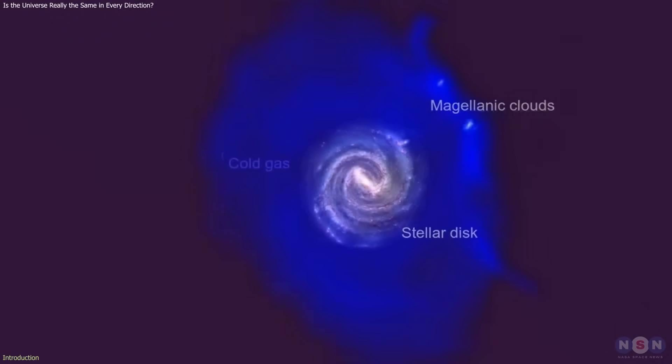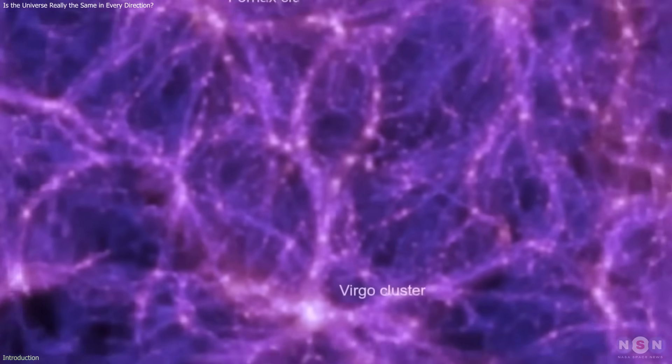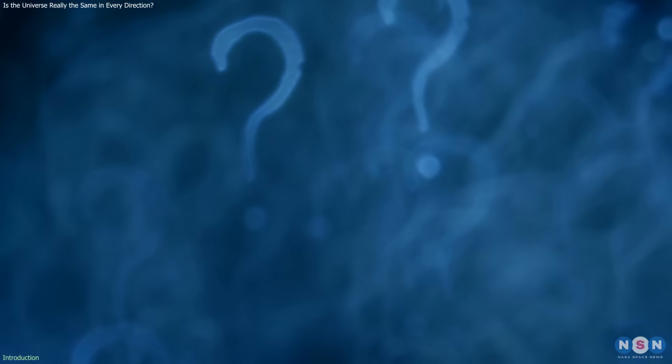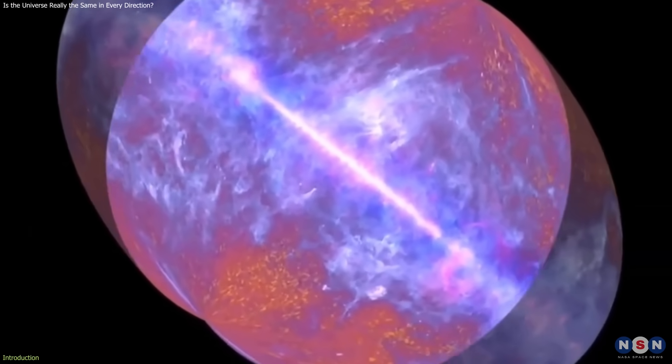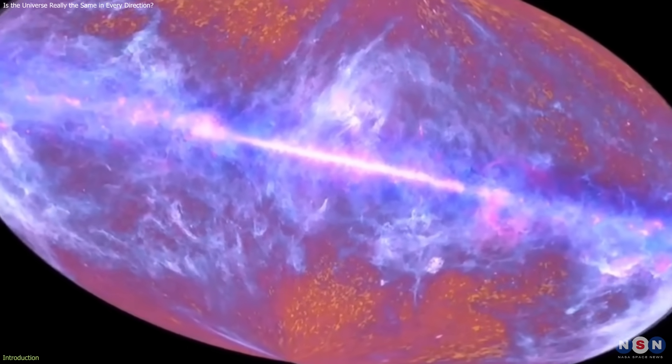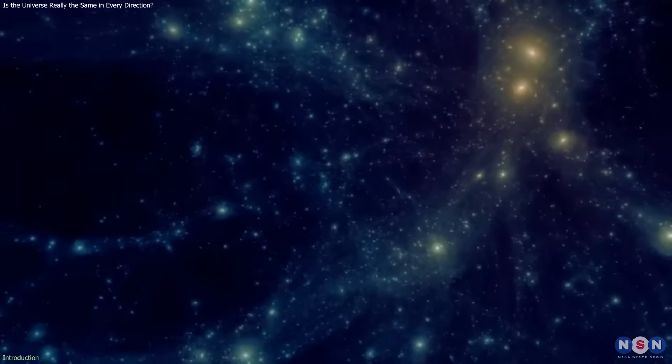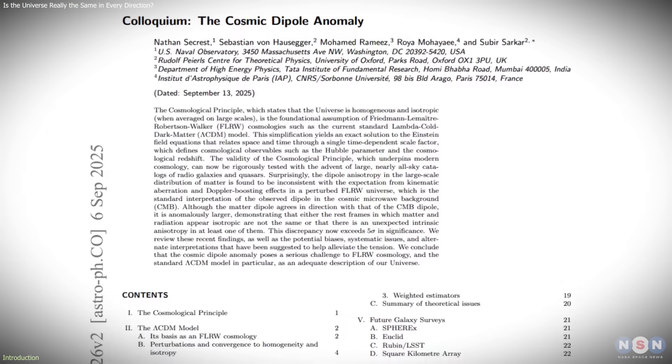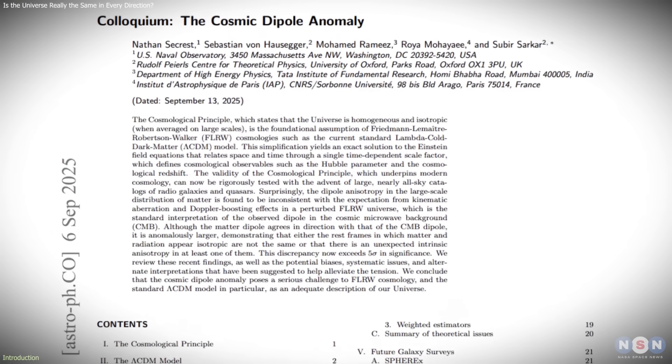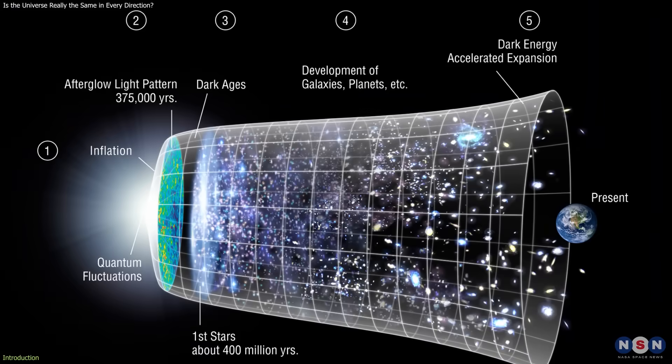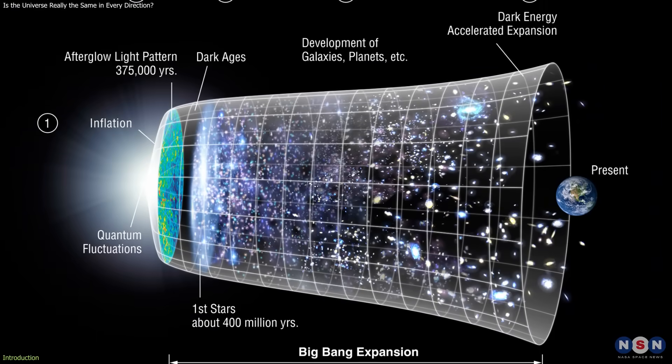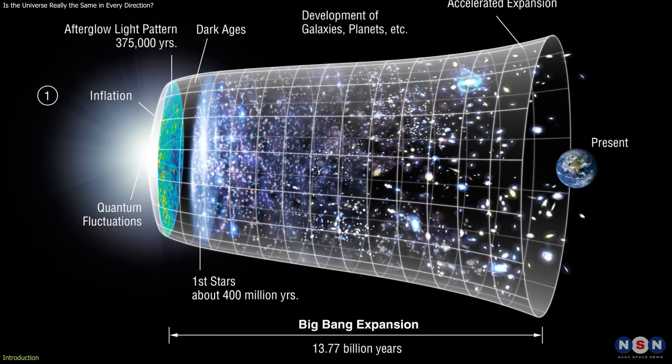For years, cosmology has assumed that the universe looks the same in every direction when viewed on the largest scales. Recent studies, however, are raising serious questions about that assumption. New observations suggest a mismatch between the cosmic microwave background and the large-scale distribution of matter, an issue known as the Cosmic Dipole Anomaly. If confirmed, this finding could challenge the foundations of the standard cosmological model.